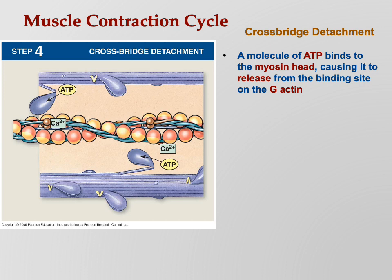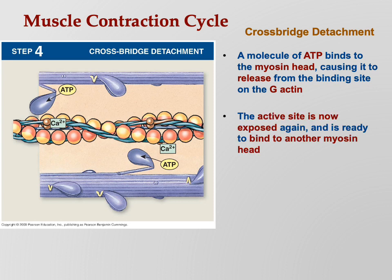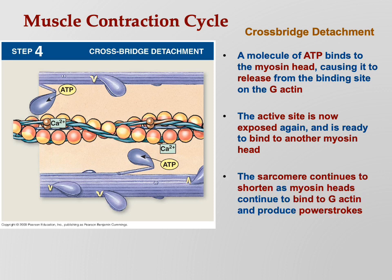Where does that ATP come from? Inside your muscle cell, you're making ATP from oxygen and glucose, so there's tons of ATP floating around. Within fractions of a second after the power stroke, another ATP molecule comes floating by and naturally attaches to the myosin head, causing it to let go. We've broken the bridge - cross-bridge detachment. The active site is now exposed again, ready to bind again.